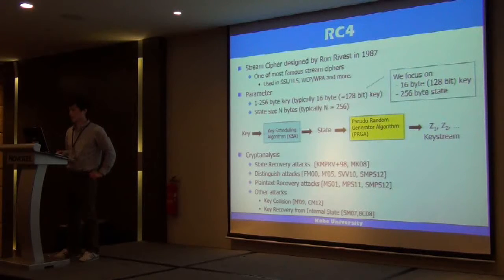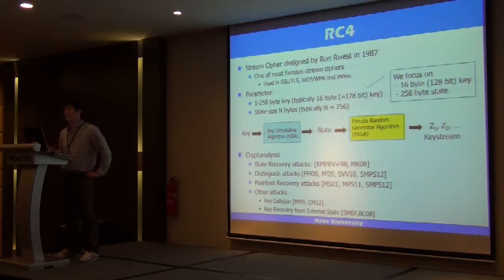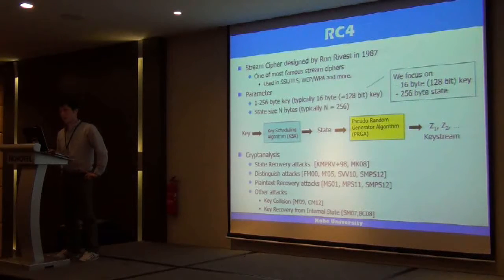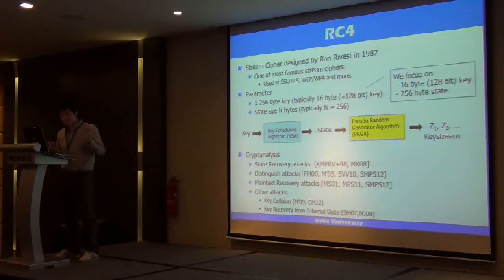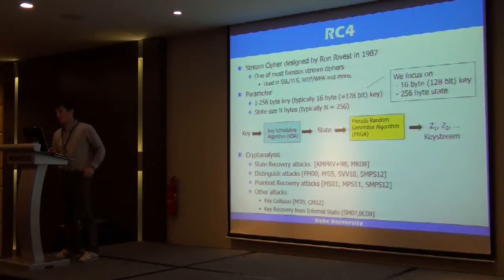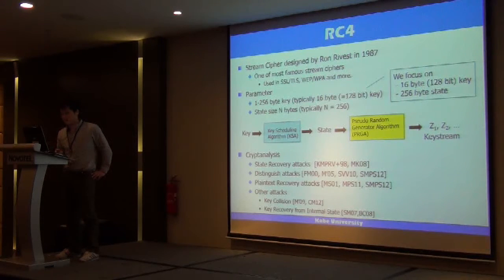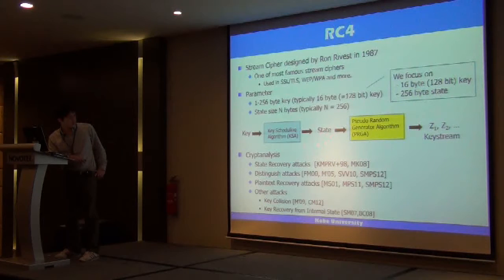RC4 is a stream cipher designed by Ron Rivest in 1987. It is one of the most famous stream ciphers, used in widely deployed protocols such as SSL/TLS and WPA. This cipher has several parameters; for example, key length ranges from 1 to 256 bytes, with 16 bytes (128 bits) typically used. State size is also variable. In this work, we focus on the standard parameters: 256-byte state. RC4 has two phases: the Key Scheduling Algorithm (KSA), which converts the key into the internal state, and the Pseudo-Random Generation Algorithm (PRGA), which generates the keystream from the state.